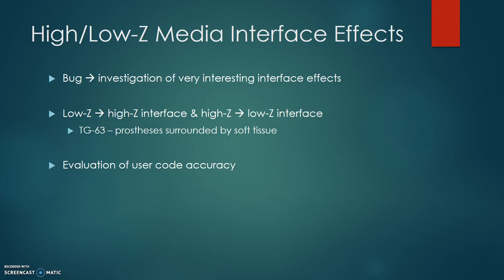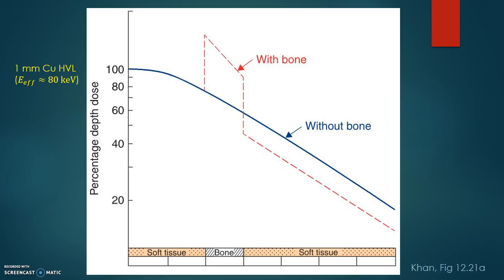A bug in the user code prompted an investigation into what happens to the radiation dose at the interface between high and low-Z media. This investigation included both interface effects from low to high-Z and from high to low-Z, although only the high to low-Z interface would be shown in the main simulations. This investigation also served the additional purpose of qualitatively evaluating the accuracy of the user code at interfaces. Here we have a PDD curve for a beam with an approximate energy of 80 keV: the blue PDD curve is for soft tissue only, while the red dashed curve includes a layer of bone at some depth. This figure shows the general trend only and does not include subtle dose perturbation effects such as backscatter, forward scatter, or buildup.